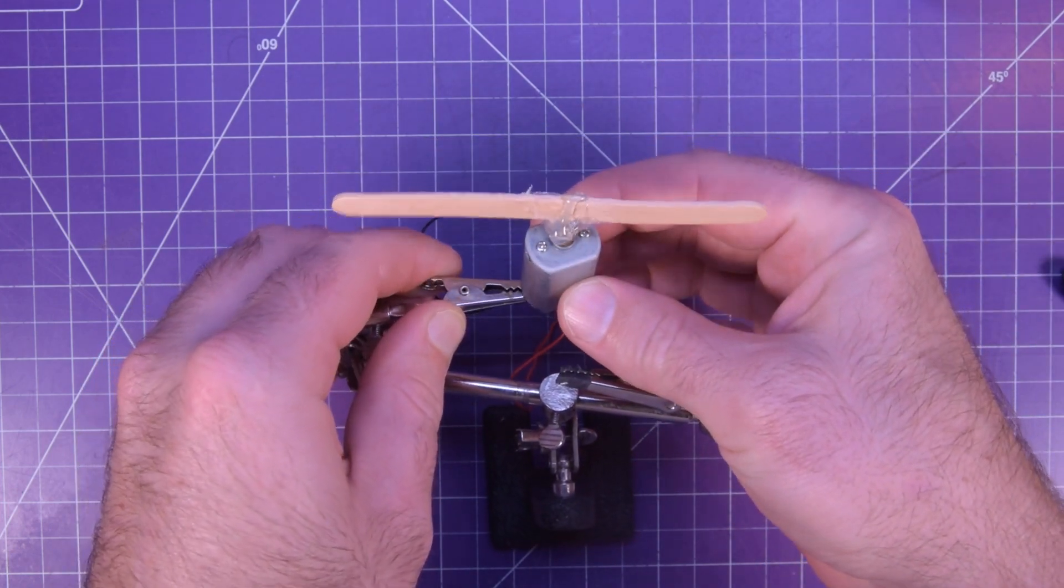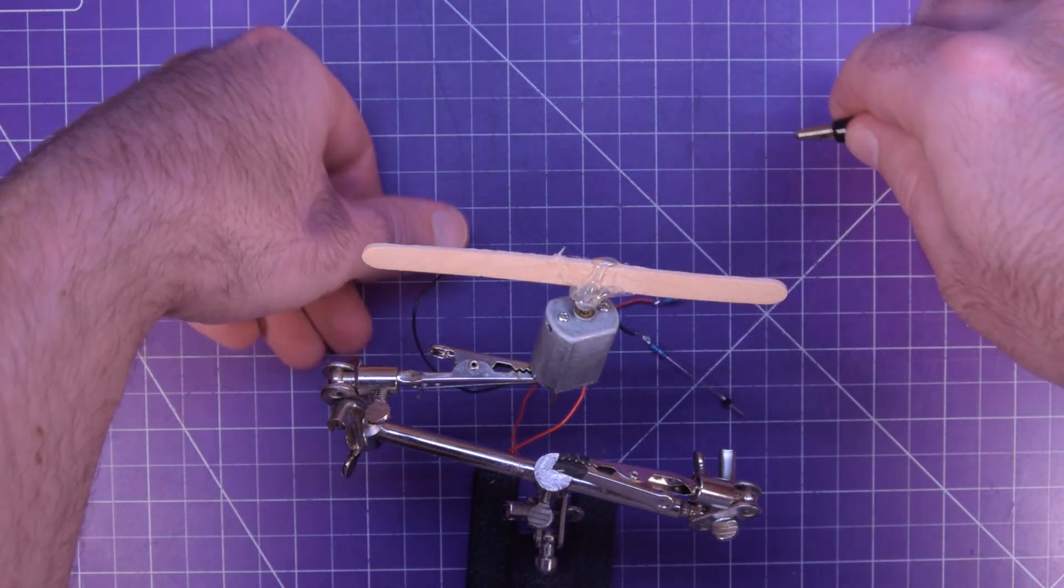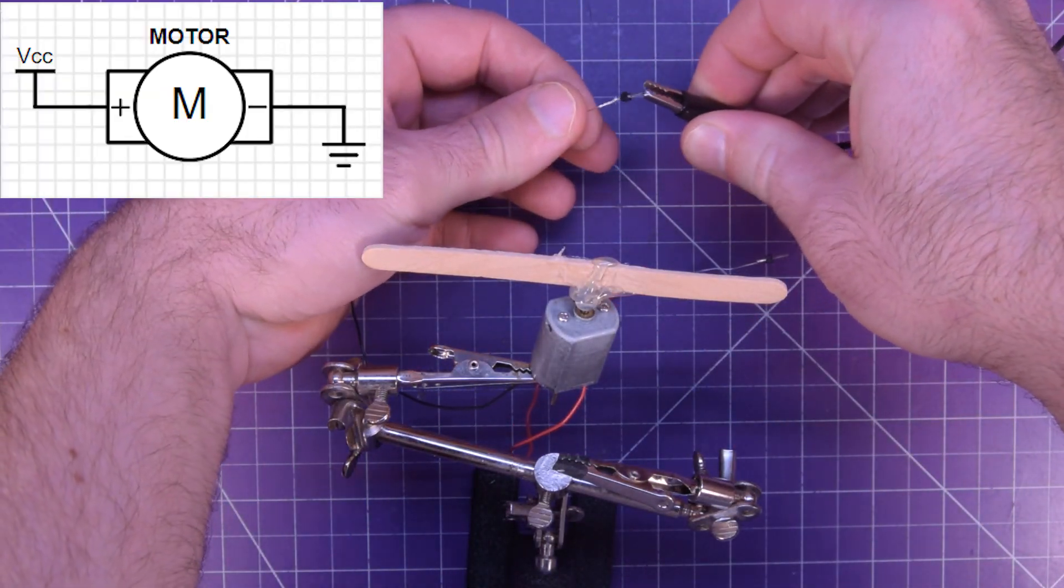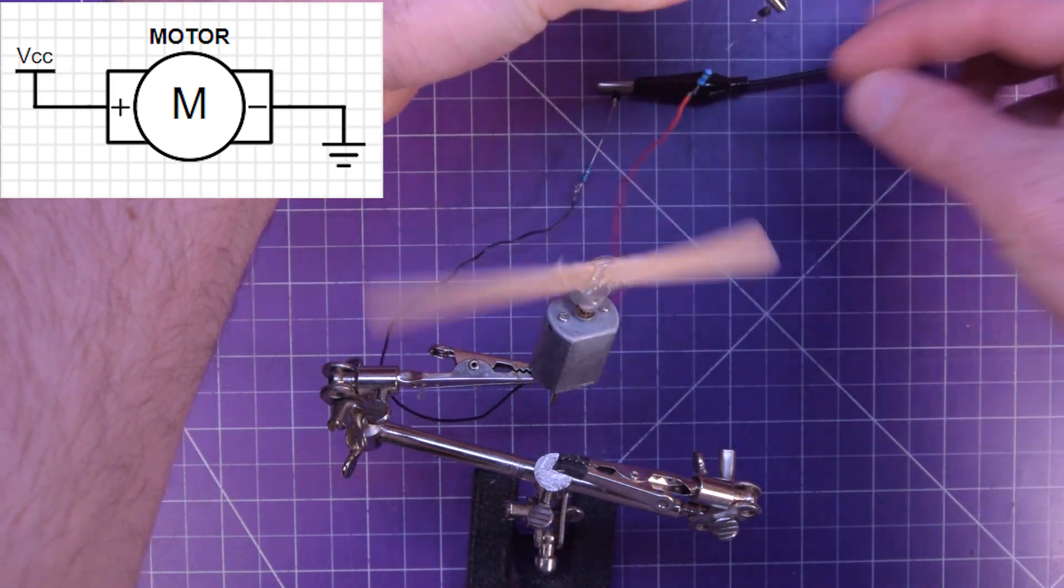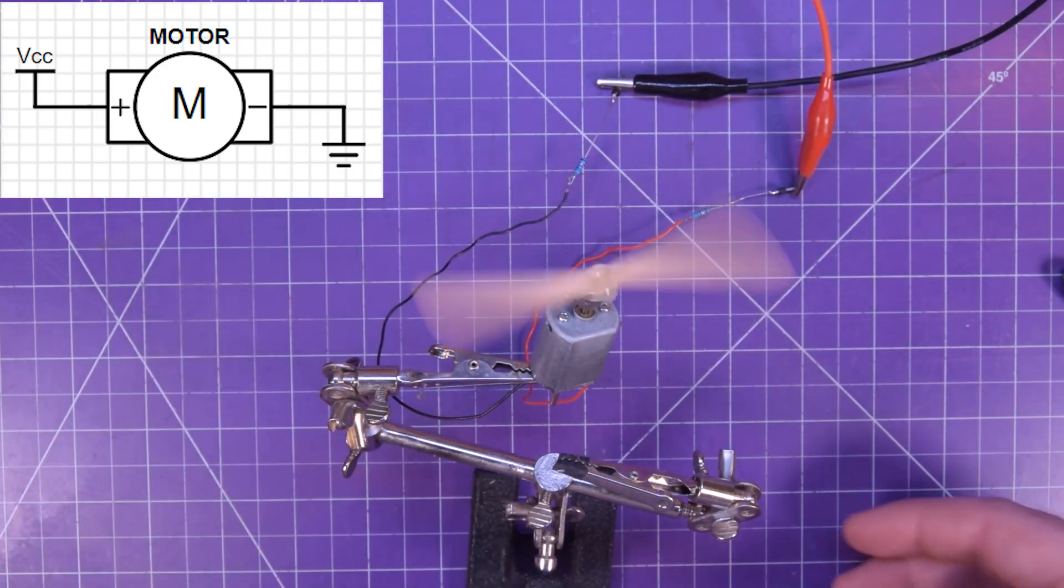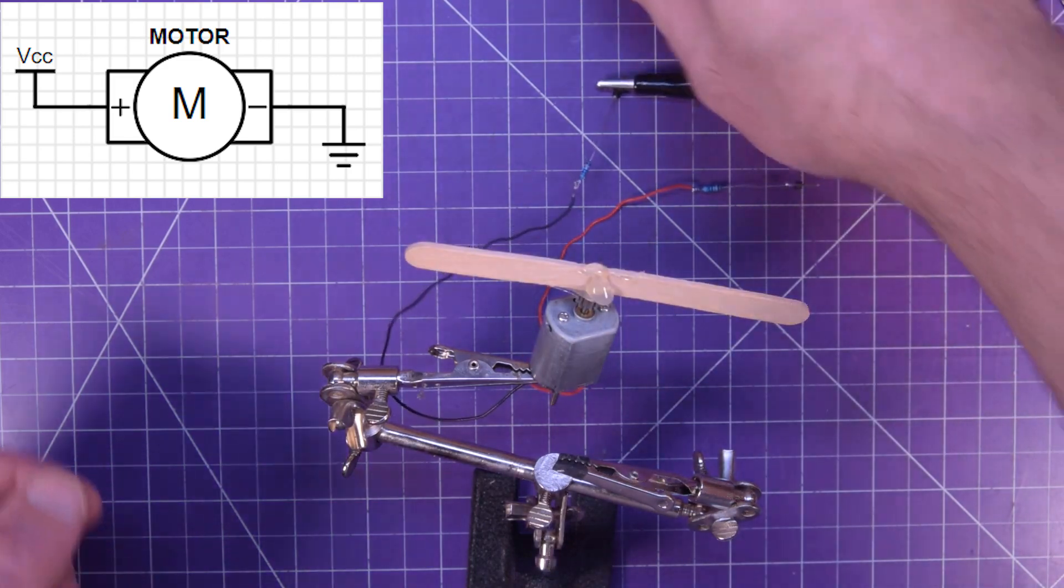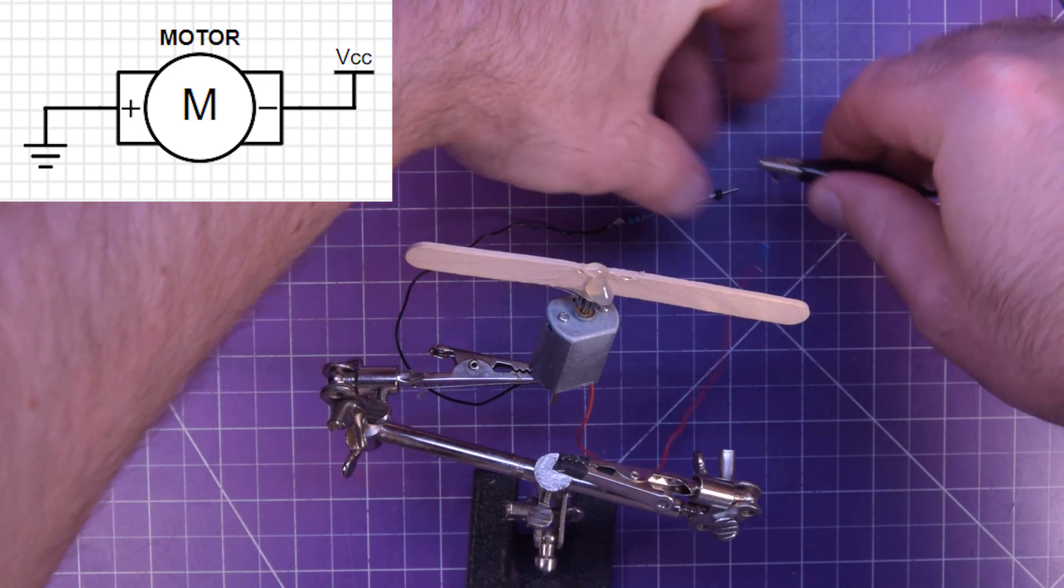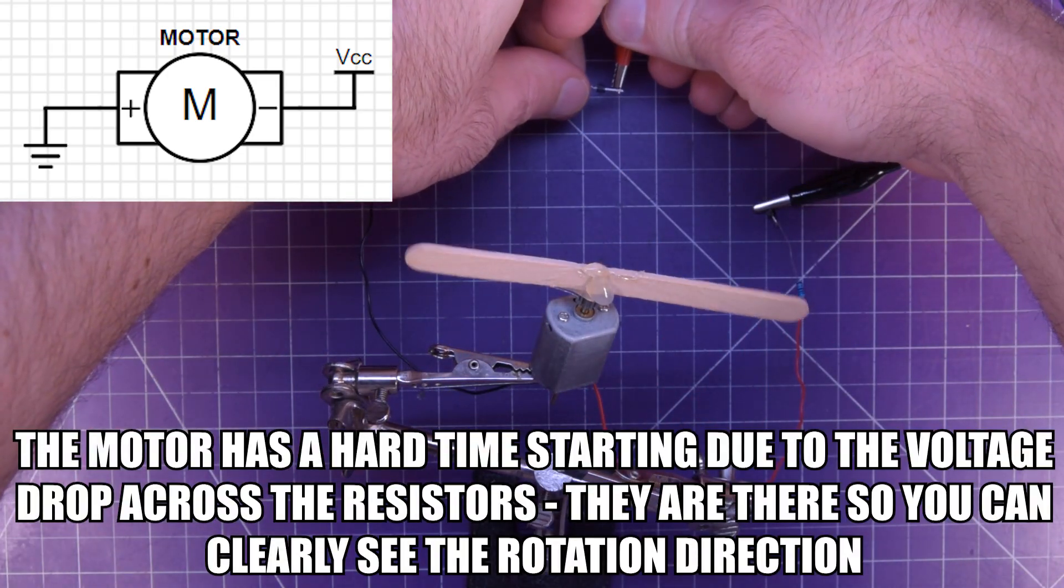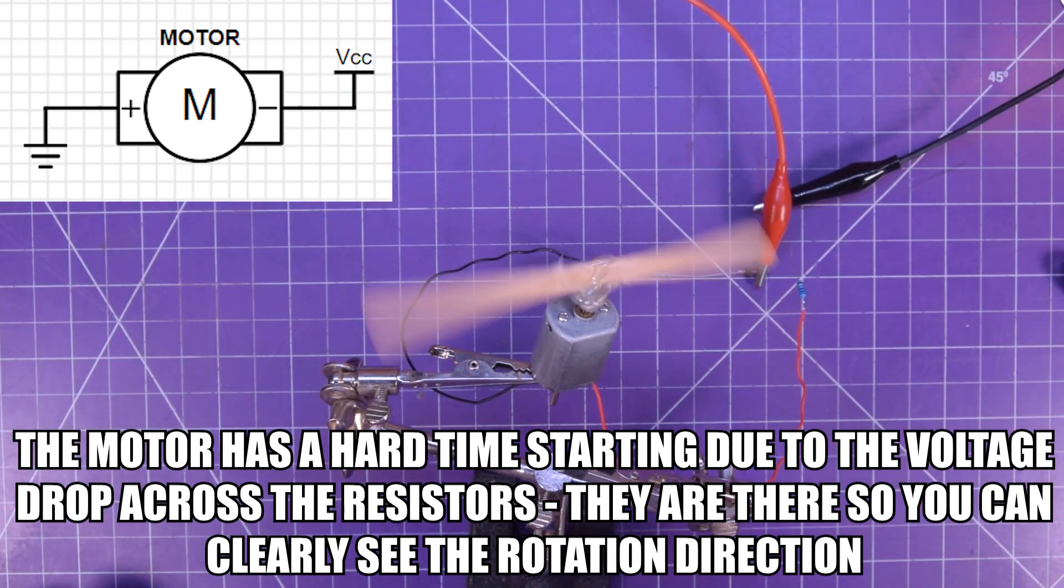These things work pretty simply. All you really have to do to make them work is plug in a ground on one wire and power on another and it spins. So if you notice it's spinning this way. To make it spin the other way, all you have to do is switch the power and the ground from one side to the other. There we go, it spins the other way.